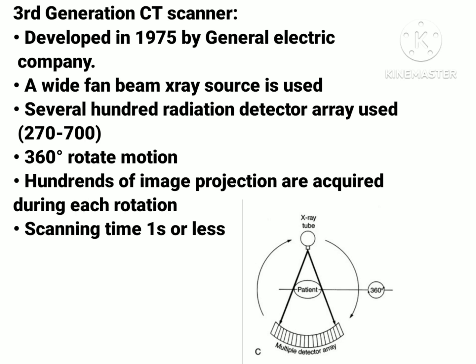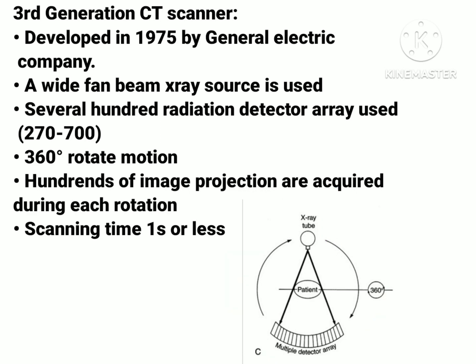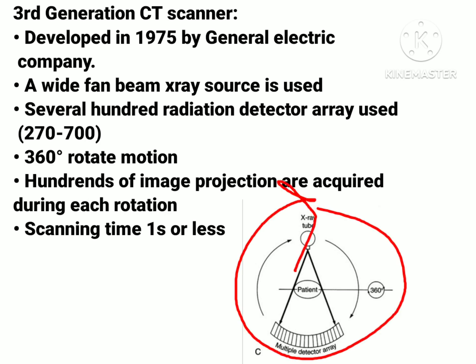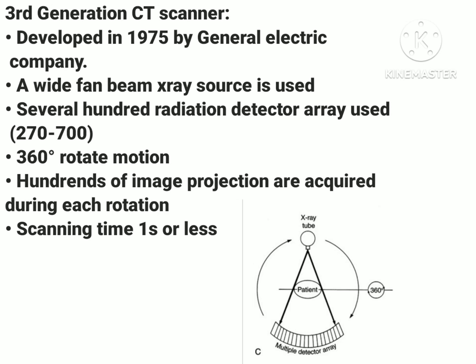Hundreds of radiation detectors were used — approximately 270 to 700. The rotation here was 360 degrees, as compared to the first and second generation CT scanners where the rotation was 180 degrees. In one 360-degree rotation, hundreds of image projections were acquired, and scanning time was one second or less.